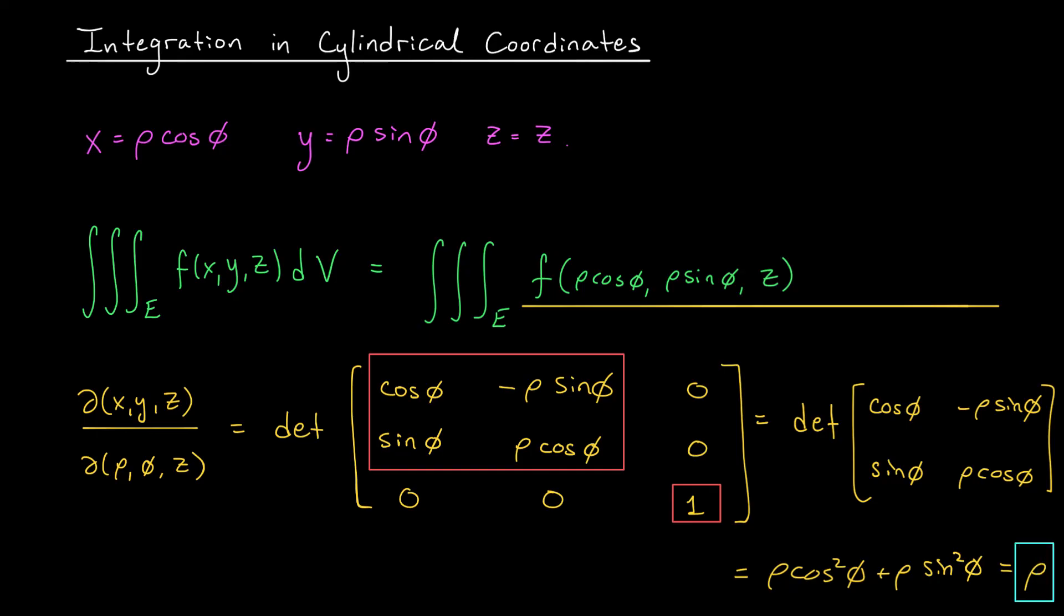Ah, now you may remember that rho was exactly our distortion factor when we converted to polar coordinates. And perhaps this isn't surprising. Polar coordinates and cylindrical coordinates are essentially the same thing, they're just taking place in different dimensions.